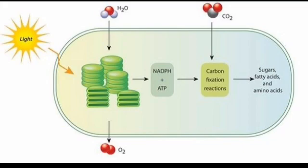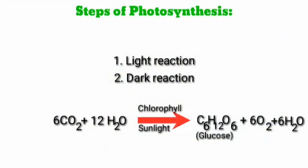In the dark reaction, the chemical energy of ATP is used to reduce carbon dioxide to carbohydrate — that is, the production of glucose. Glucose is later stored as starch in the leaf.